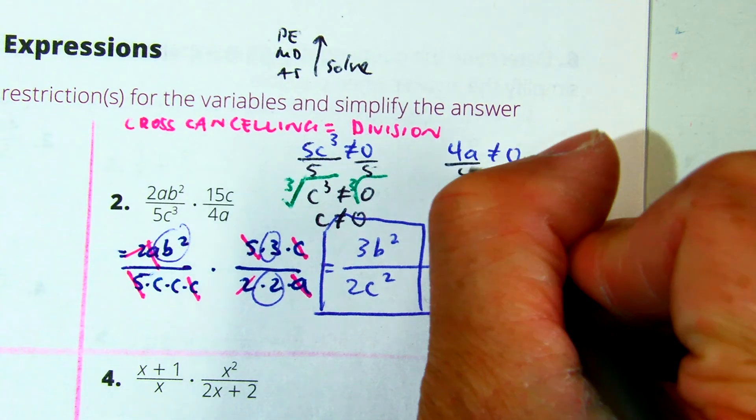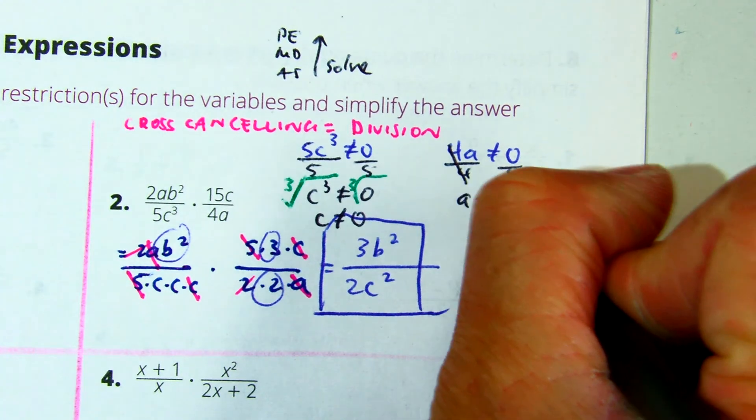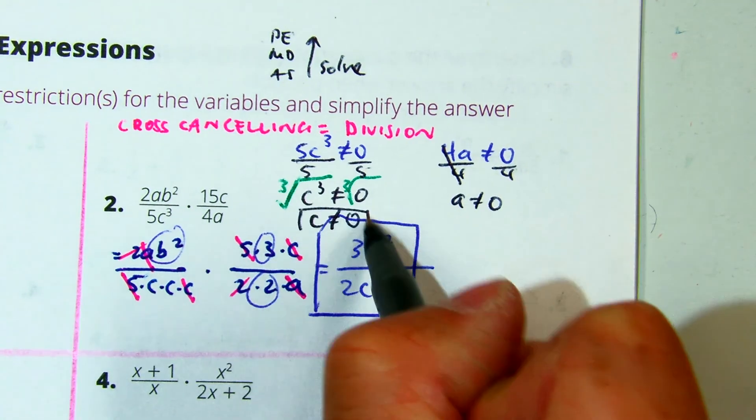Do the same thing on this side. C and A both cannot be 0. Those are my restrictions.